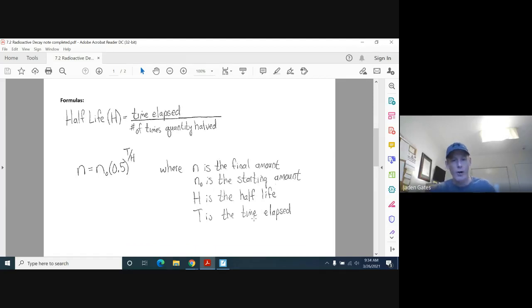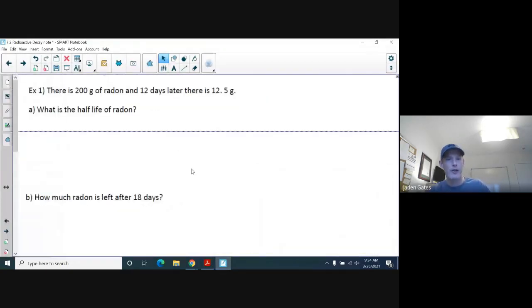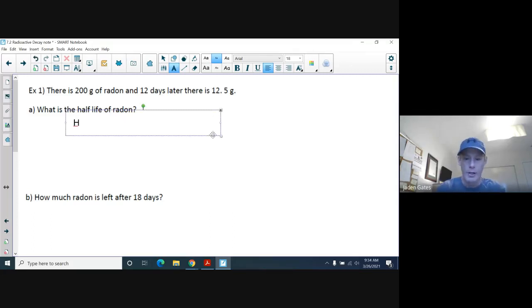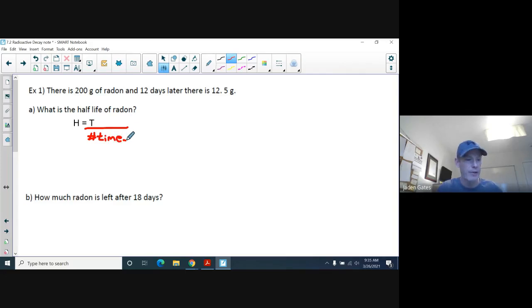So I'm going to go through how we are going to use these two formulas to solve a type of question. So for example, here's a radioactive material called radon. And so there is 200 grams of radon, and 12 days later, there's 12.5 grams. So what is the half-life of radon? So what I'm going to use is that first formula that I had, where we have H for half-life is equal to our time, divided by the number of times the material halved.